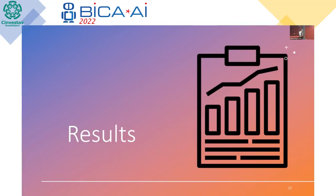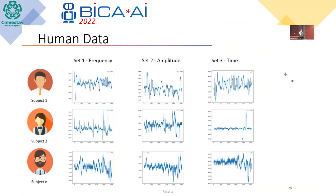What are the results? Once we obtained the human data, we ran three sets and changed three parameters: frequency, amplitude, and time. We changed these properties in the standard and oddball stimulus and performed the same experiment for each subject.